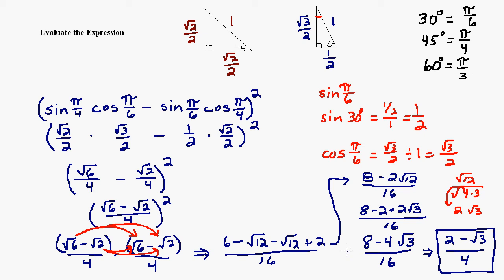The simplifying of all the square roots, foiling, simplifying your radical, and reducing took about as many steps as just plugging in the sine and cosine values. I hope that helps.